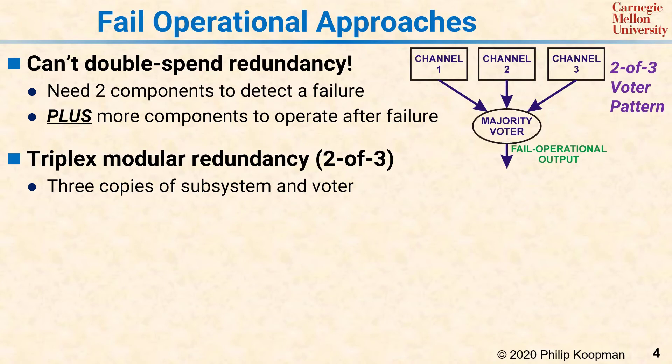How it works with the voter is that if any one of the channels fails, the other two will outvote it, and the output will still be correct. This approach can work for some systems, especially where the channels are relatively unreliable, and the voter can be tens or hundreds or thousands of times more reliable than any of the individual components. So if you have complicated channels and a simple voter, this can work well for non-life-critical systems.